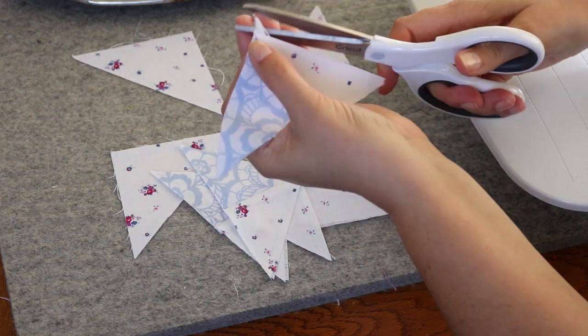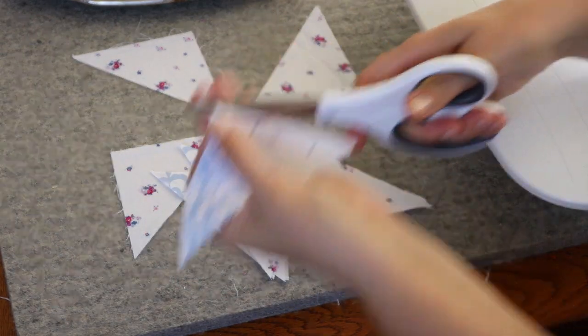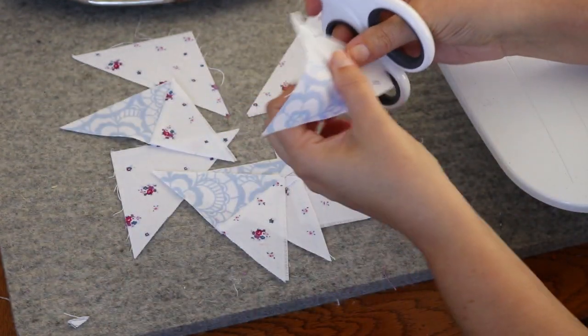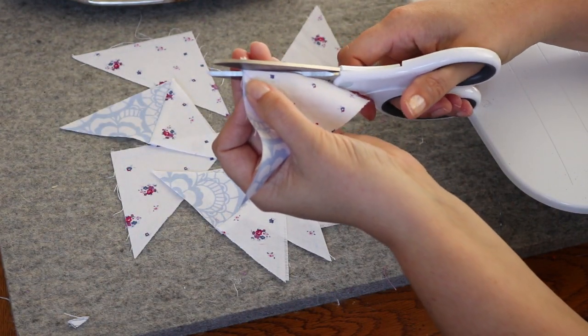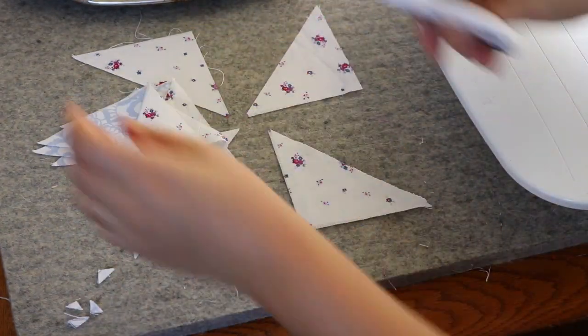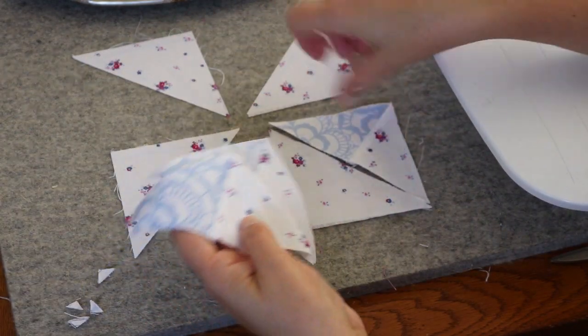Just like with half square triangle units there's some dog ears here at the top. I'm going to go ahead and clip those off. Now I can lay these out.